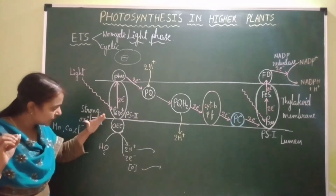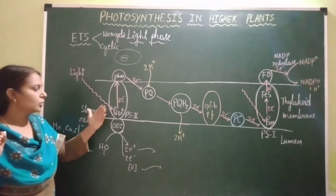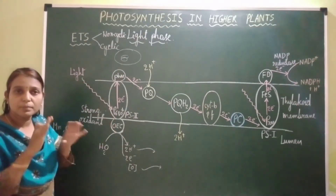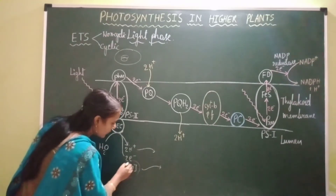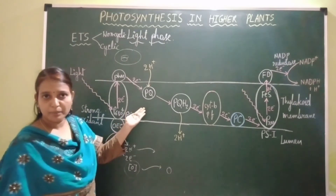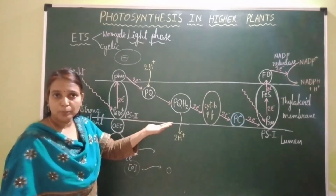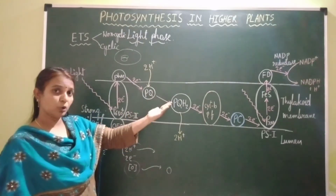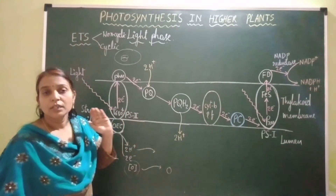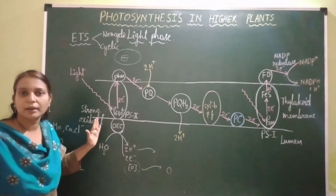The electrons from water splitting are picked up by Photosystem 2, restoring the electrons that PS2 had lost. The nascent oxygen released into lumen diffuses out of the thylakoid membrane into the stroma of the chloroplast, then out of the chloroplast into the cytoplasm of the mesophyll cell, and from the cytoplasm it diffuses out of the mesophyll cell and reaches the leaf surface, entering into the atmosphere.